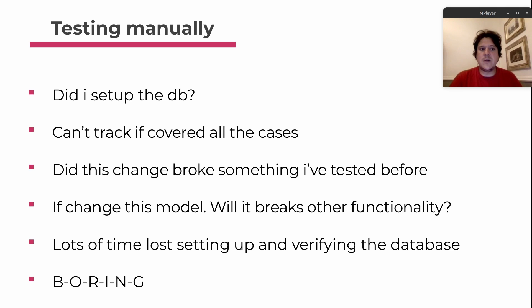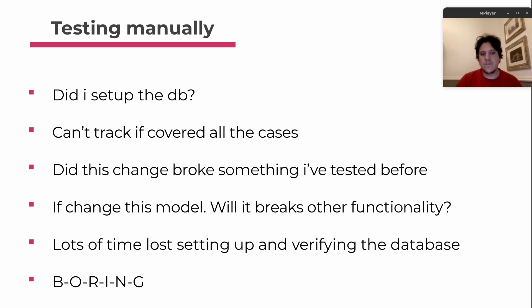You start asking questions: did I set up the database before the test? Can you track if you covered all the cases? You start tracking whether purchasing an out-of-stock item won't change the database, and then you change the code to fix another use case — but did you break what was tested before? Does your new code cover all the previous test cases? If another dev changes a model or helper, will it break other functionality that uses the same models or helpers?